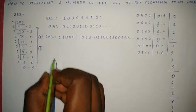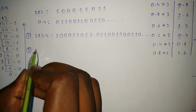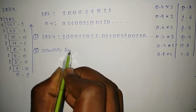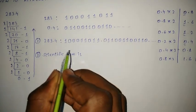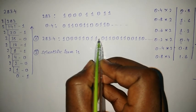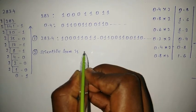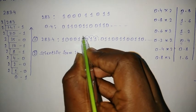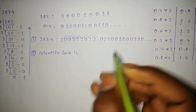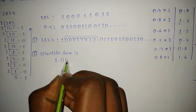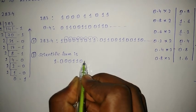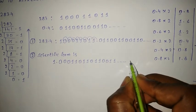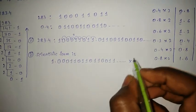The next step is to convert 283.4 into scientific form. To convert to scientific form, shift the decimal point to after the first 1. Counting the shifts: 1, 2, 3, 4, 5, 6, 7, 8 — so the scientific form is 1.00011011 01100... × 2^8, meaning we shifted the point 8 times.